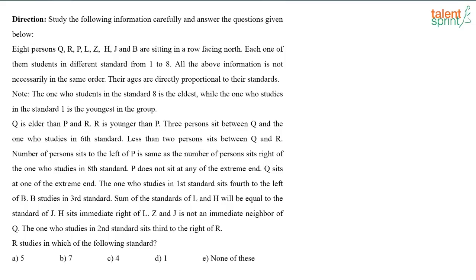Let us read this question and note down the given information first, then we will start solving. Eight persons Q, R, P, L, Z, H, J and B are sitting in a row facing north. Each of the students studies in a different standard from 1 to 8, not necessarily in the same order. Their ages are directly proportional to their standards — the one studying in 8th standard is the eldest and the one in 1st standard is the youngest.